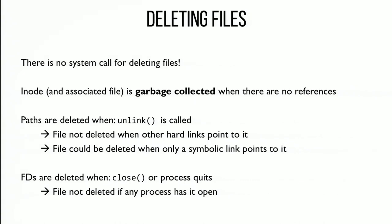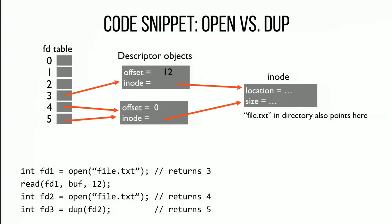If you removed a file and its reference count went down to zero in the inode, but you still have a file descriptor pointing to it, it won't remove that file. When you call close, it will see there are no longer any file descriptors pointing to that inode either, and then it would remove it. It's an 'and' — you can't have any names or hard links, and you can't have any open file descriptors pointing to it, in order to remove an inode and the associated data.